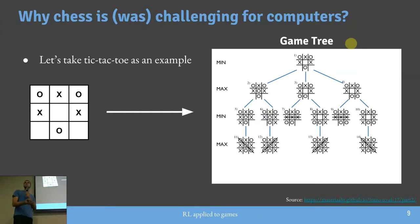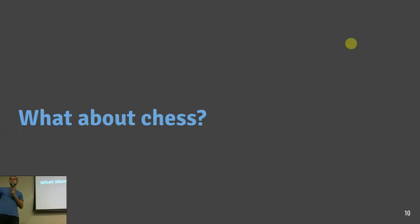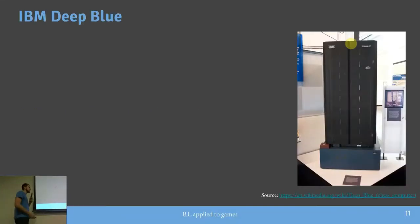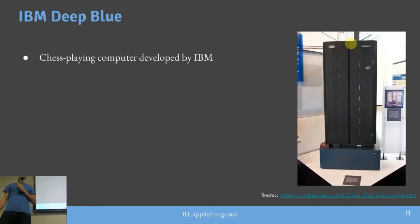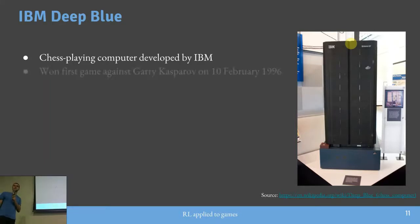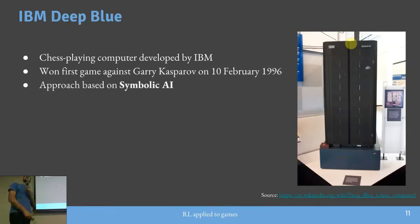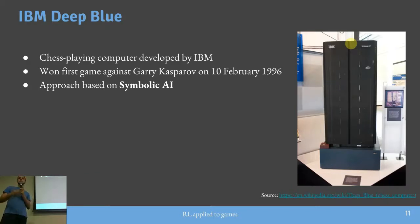Para o jogo da velha, isso é tranquilo de fazer, mas em jogos como xadrez a quantidade de memória necessária para expandir todos os estados possíveis torna o problema muito difícil. O IBM Deep Blue foi o primeiro programa de computador a ganhar de um grande mestre de xadrez — Gary Kasparov. Essa abordagem foi baseada em IA simbólica, com conhecimento de seres humanos inserido manualmente e algoritmos para fazer o programa funcionar.